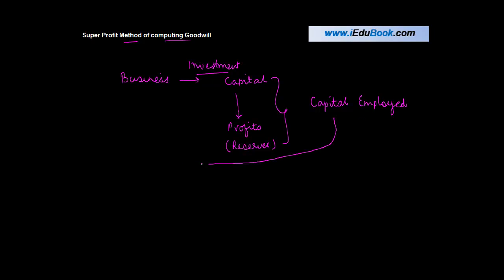Capital employed basically can be computed in two manners. It can either be taken as a sum total of share capital plus free reserves minus fictitious asset. Fictitious asset is something like goodwill, preliminary expenses, and others.